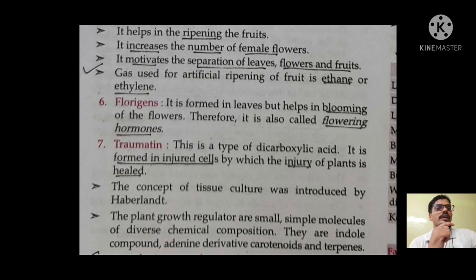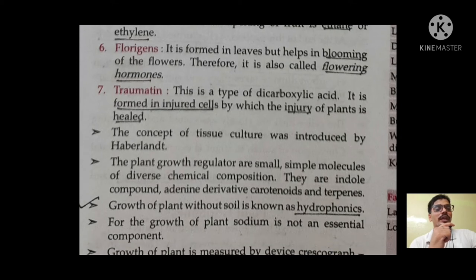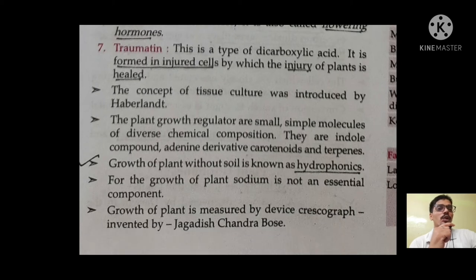Ethylene's main function is ripening of fruits, increasing the number of female flowers, and motivating separation of leaves, flowers, and fruits. Remember that the gas used for artificial ripening of fruits is ethane or ethylene. Florisants is called the flowering hormone because it helps in the blooming of flowers. Traumatine is formed in injured cells, by which the injury of plants is healed — if a question comes on traumatine, it will be about which hormone helps in the recovery of plant injury. Growth of plant without soil is known as hydroponics — this has appeared in many exams.